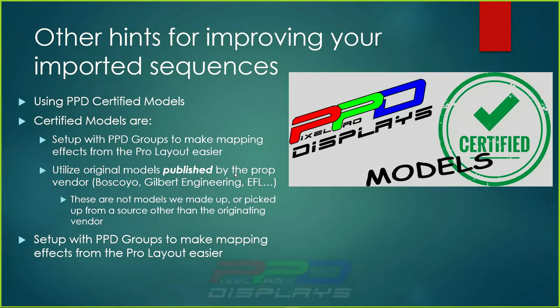These are published models by the prop vendors such as Boscollo — the same ones in the downloads. We're not creating brand new models. All we're doing is taking the existing models provided by the vendors and either building submodels into them that make sense, or fixing the submodels that were already there. We're creating groups that make it easy for you to map effects from the Pro Layout. We get them only from the vendor download or directly from the vendor because we want to use their wiring and the way they set up the prop.